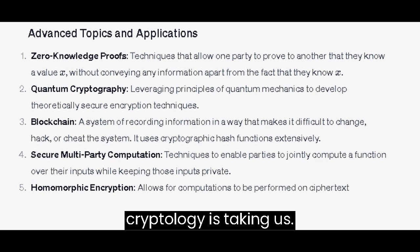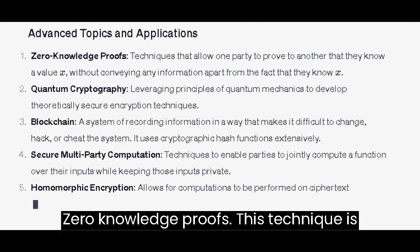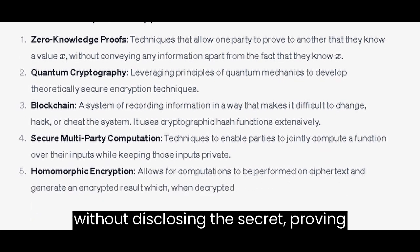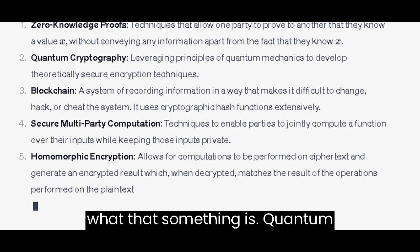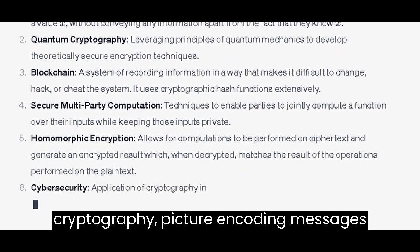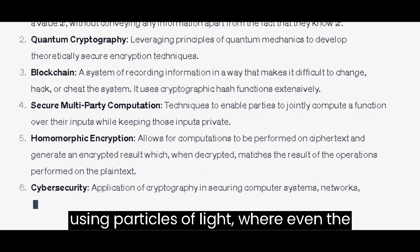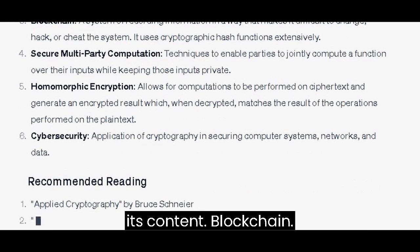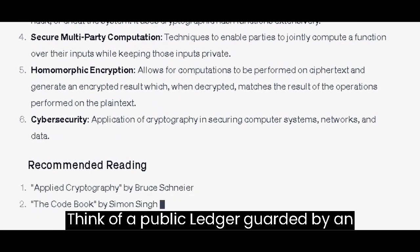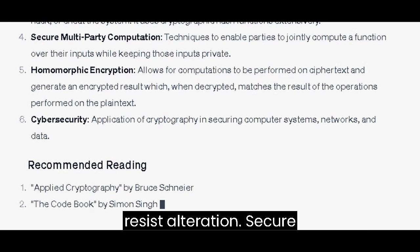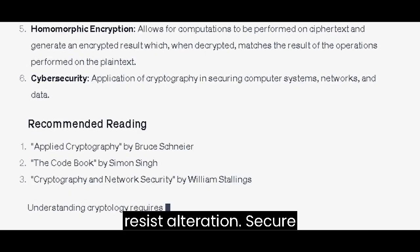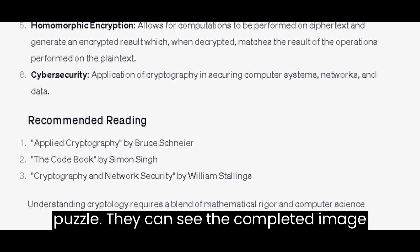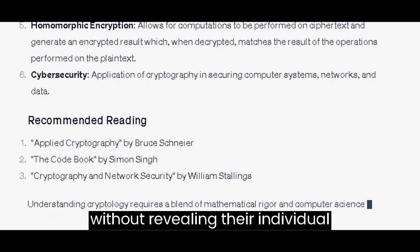Where Cryptology is Taking Us. Zero-knowledge proofs: this technique is akin to a magician revealing a trick without disclosing the secret — proving they know something without revealing what that something is. Quantum Cryptography: picture encoding messages using particles of light, where even the act of intercepting the message changes its content. Blockchain: think of a public ledger, guarded by an army of mathematically linked blocks that resist alteration. Secure Multiparty Computation: imagine a group of people each holding a piece of a puzzle — they can see the completed image without revealing their individual pieces.